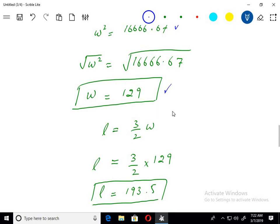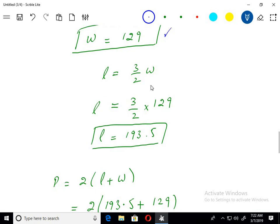L equals 3 over 2 W. Just putting the value of W here, I can get L as well using the calculator. L equals 193.5.